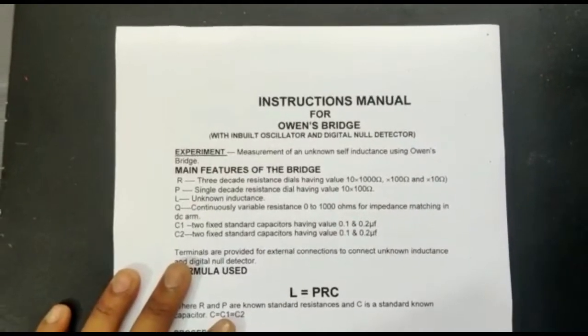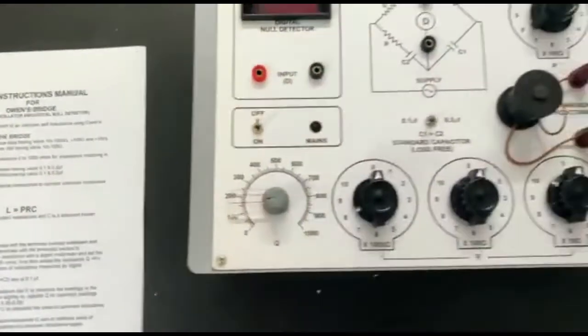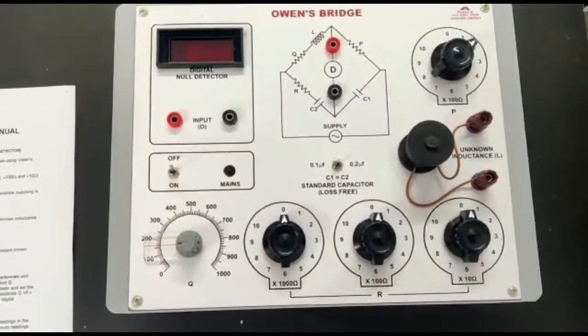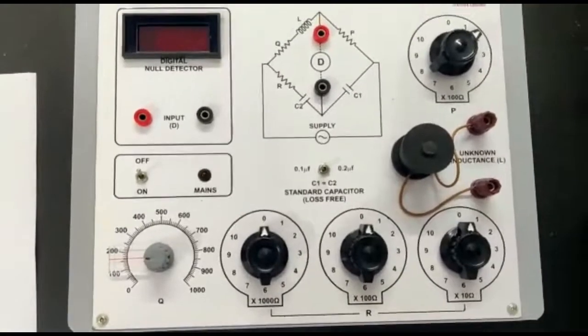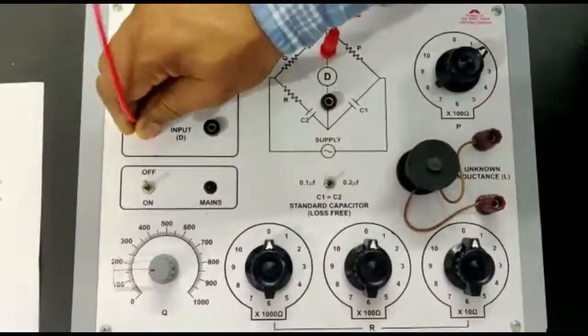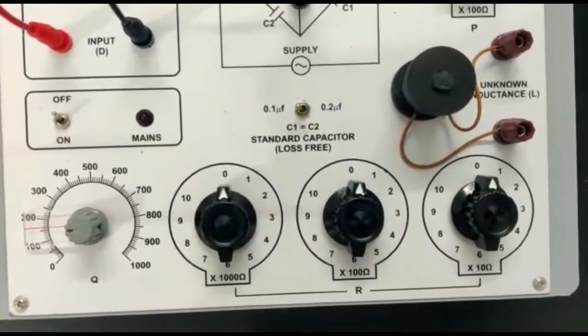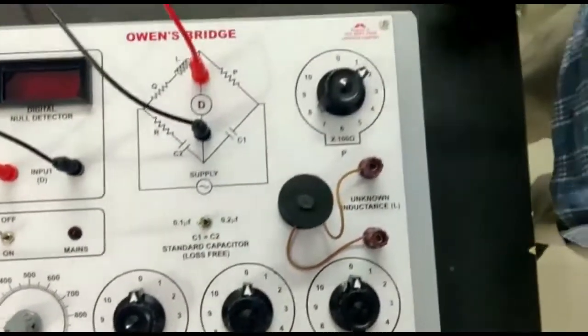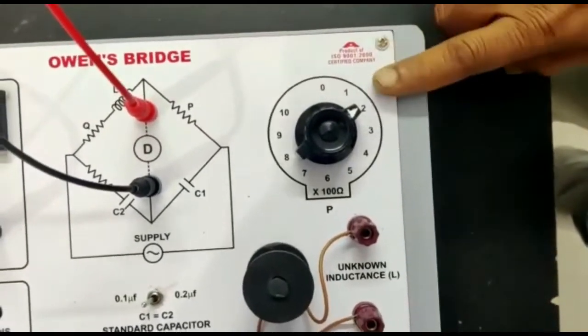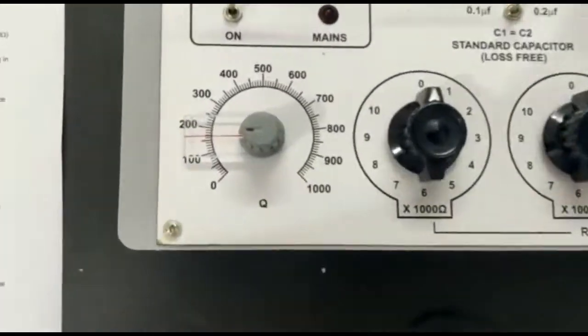Measurement of unknown self inductors using Owen Bridge. All the required accessories are provided internally. Now connect the digital detector and set C1 equal to C2 at 0.1, and set P dial to 200.